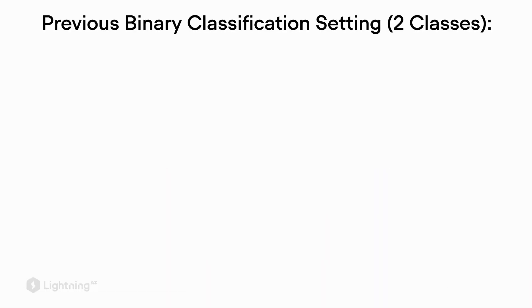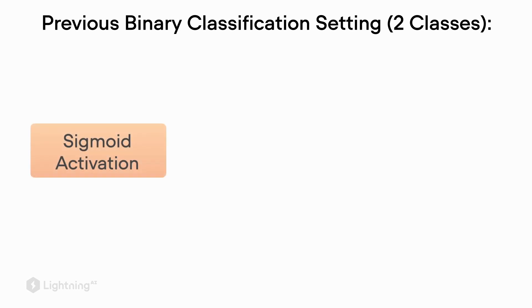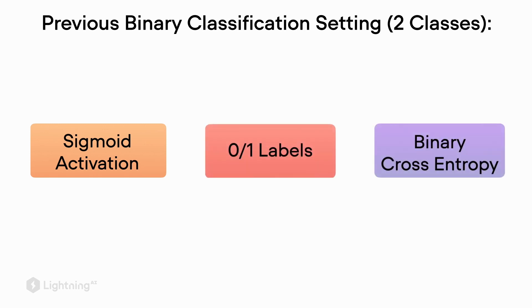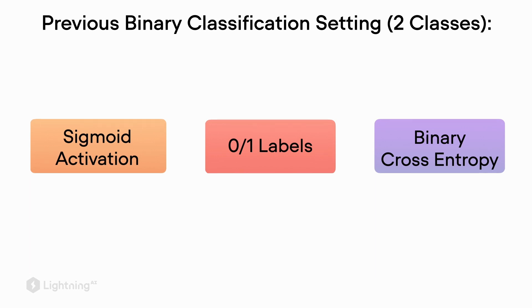Previously in the last unit, we talked about logistic regression for binary classification — that means two classes. We had the sigmoid activation function, 0 and 1 class labels, and the so-called binary cross entropy loss function that we use to train the logistic regression model.